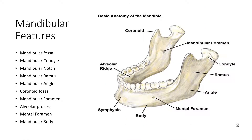There are several mandibular features to recognize. The first is the mandibular fossa, which is an articular surface. There's the mandibular condyle, which is a rounded articular surface, and a mandibular notch. There's the ramus which is the arm of your mandible, the mandibular angle, the coronoid fossa, the mandibular foramen, the alveolar process, the mental foramen which is located on your mentalis or your chin, and then the body of your mandible.